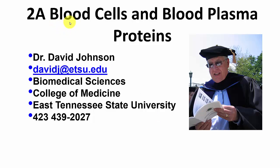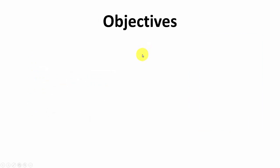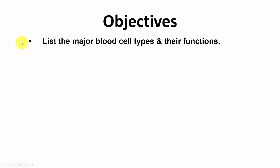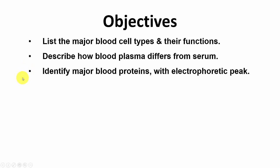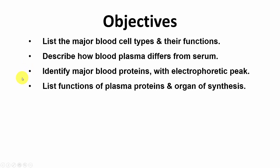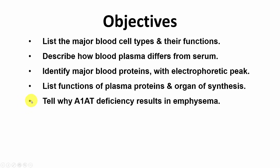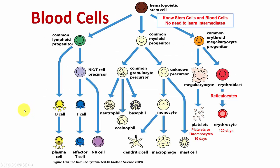This is my first lecture on blood cells and blood plasma proteins. The learning objectives are: list the major blood cell types and their functions; describe how blood plasma differs from serum; identify major blood proteins with electrophoretic peak; list functions of plasma proteins and organ of synthesis; and explain why alpha-1 antitrypsin (A1AT) deficiency results in emphysema.